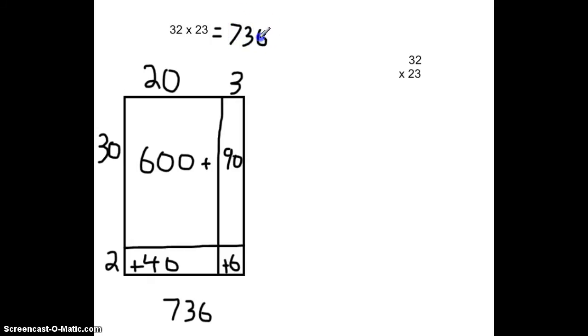And we can do this for any numbers that we multiply together. We can use a rectangle to multiply. Trying to make some connections with the algorithm that we've used in the past, we can say 3 times 2, because these are both in the ones place, is equal to 6.